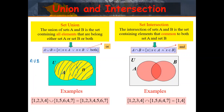Alright, so for example, set A = {1, 2, 3, 4} union set B = {1, 5, 6, 4, 7}. So A union B — that is {1, 2, 3, 4, 5, 6, 7}. Okay that is A union B, which includes all the elements of set A and B.